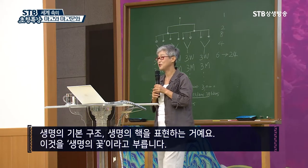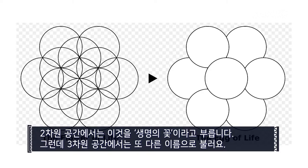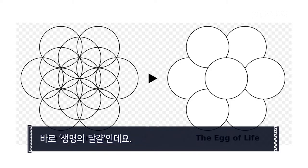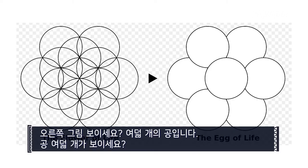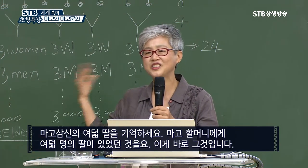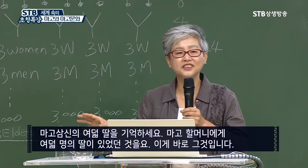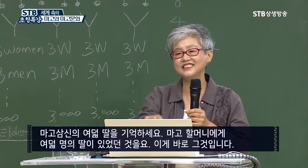When it's in a two-dimensional space, it's called the flower of life. When they use three-dimensional, there is another name, which is the egg of life. Do you see that one on the right side? That's eight bowls — do you see eight bowls? So just remember: eight daughters of Mago Tria, Mago Samshin. Mago Hermes had eight daughters — that's what this is about.